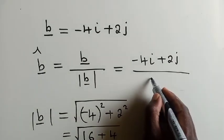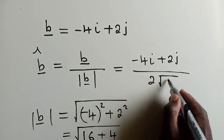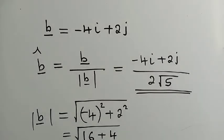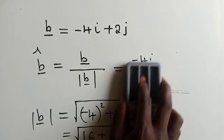So this is what we need to put here, 2 multiplied by the square root of 5. So this is our unit vector. We go to question B.